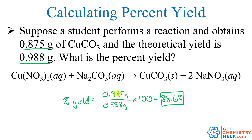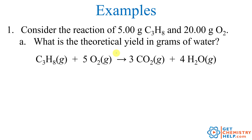Again, it's the amount you actually made — the actual yield — divided by the theoretical yield, the amount you should have made if everything went perfectly, times 100. Let's work a couple more examples.